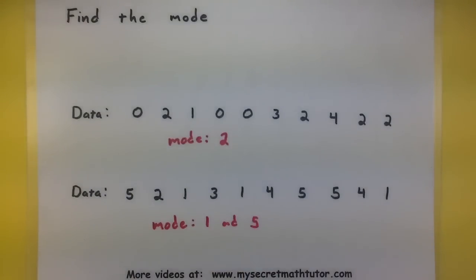So this second set of data is an example of something that is bimodal, has two modes. So remember that you're just searching for something that shows up the most number of times, and you can find your mode.